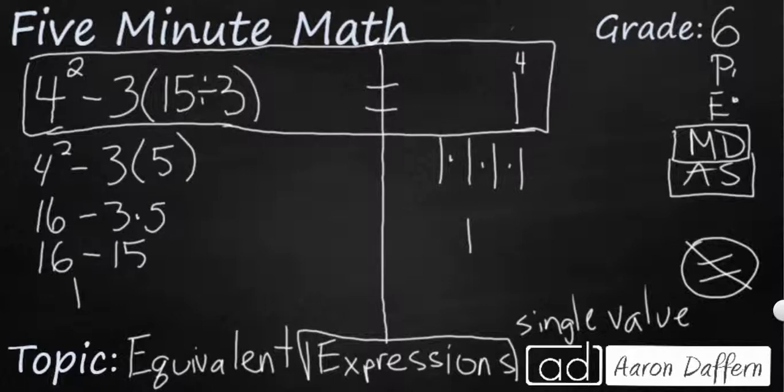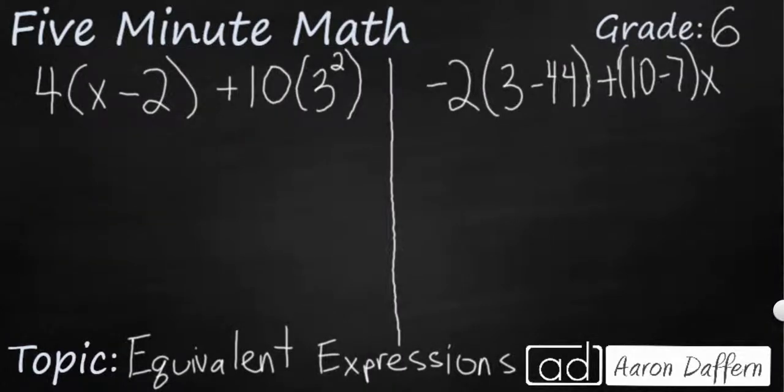Let's see what happens when we look at expressions that include a variable. So here we have two large expressions. They each have an unknown x. So we need to see whether or not they are equivalent. So using our order of operations again, we are going to still start with our parentheses. We have 4 parentheses x minus 2. We are going to use our distributive property and multiply 4 by both of these. So 4 is going to be times x and then 4 times minus 2 is going to give us a minus 8.